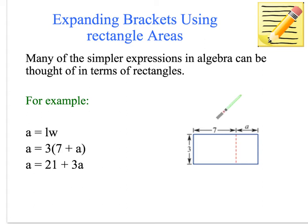This side here is 7 plus a. We're not multiplying these two together because we need to add them to find out the length of this side. We know that this side is 3, but we don't know what the length of this side is. So 3 times (7 + a)—this is how we write it with the brackets.